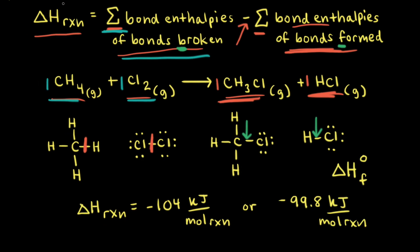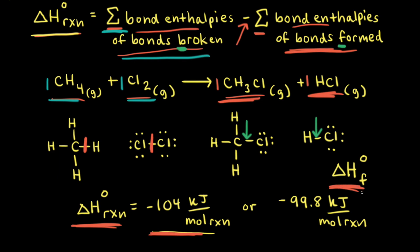When everything is under standard conditions, we add a superscript 'not' symbol, giving the standard change in enthalpy for the reaction. The value we calculated — negative 104 kilojoules per mole of reaction — is therefore the standard change in enthalpy. However, since bond enthalpies are only averages, this is only an estimate. A more accurate method is to use standard enthalpies of formation, which for this reaction gives negative 99.8 kilojoules per mole — quite close to our estimated negative 104.